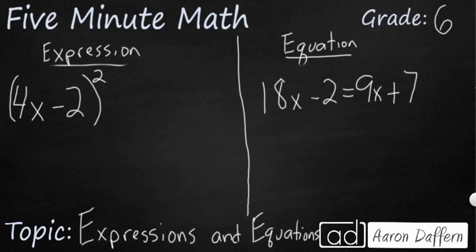So if I want to make my x into a 1, well, I can simplify it like this. 4 times 1 minus 2 squared. So really, that's 4 minus 2 squared. So that's going to be 2 squared, which makes 4.